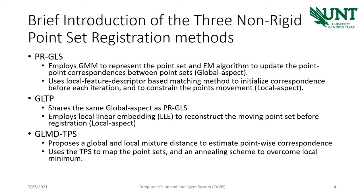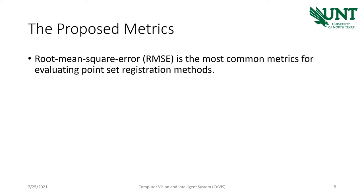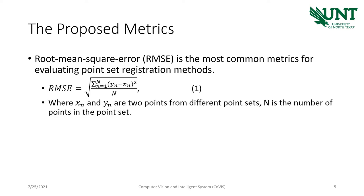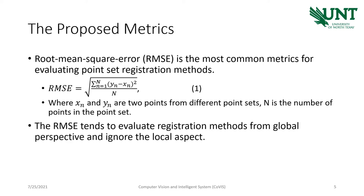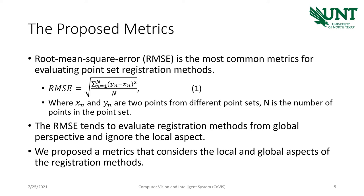The mixer distance includes local and global aspects. The most common metric to evaluate the registration results is root mean square error, shown in equation 1, where Xn and Yn are two points from different point sets, and capital N denotes the number of points in the point set. The root mean square error focuses on the global perspective and ignores the local aspect, which is not adaptable in our case. So we designed a metric that considers both the local and global aspects of the registration methods.